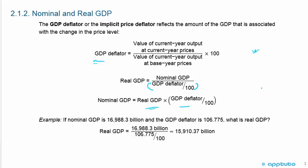For example, if nominal GDP is 16,988.3 billion and the GDP deflator is 106.775, what is real GDP? Using the formula, real GDP equals nominal GDP divided by the GDP deflator divided by 100. So you're going to get real GDP equals 15,910.37 billion.